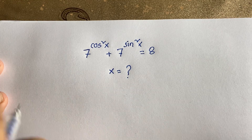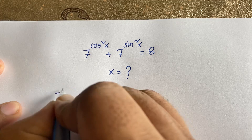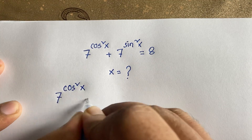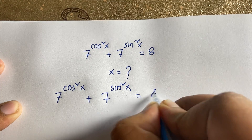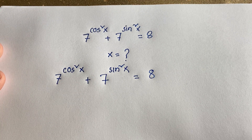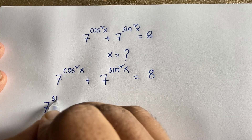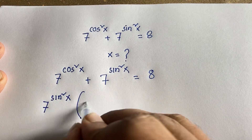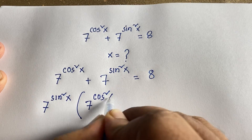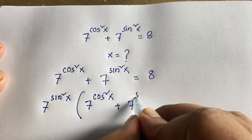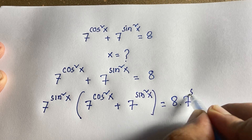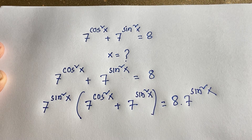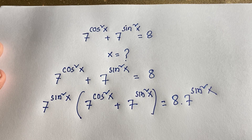Our question is: 7 to the power cos squared x plus 7 to the power sin squared x is equal to 8. At this moment, I multiply both sides by 7 to the power sin squared x. So 7 to the power sin squared x times the quantity 7 to the power cos squared x plus 7 to the power sin squared x equals 8 times 7 to the power sin squared x.